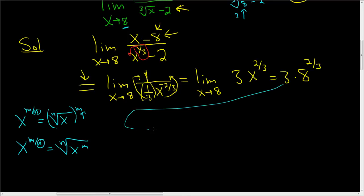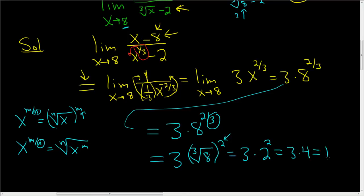So simplifying this, we have 3 times 8 to the 2/3. So we have 3, the 3 goes in the little pocket, so it's the cube root of 8. And where do you put the 2? Let's put it outside because it's easier. So we get 3 times the cube root of 8 is 2, and then we still have this 2 here. So we get 3 times 4, which is equal to 12.